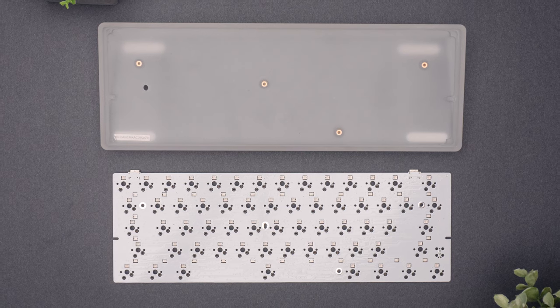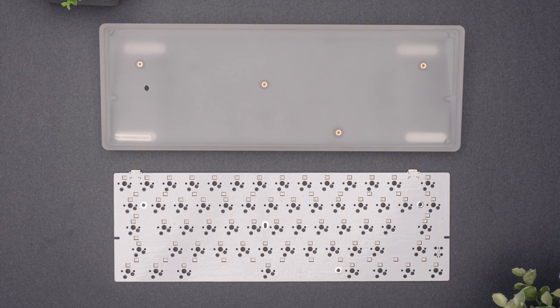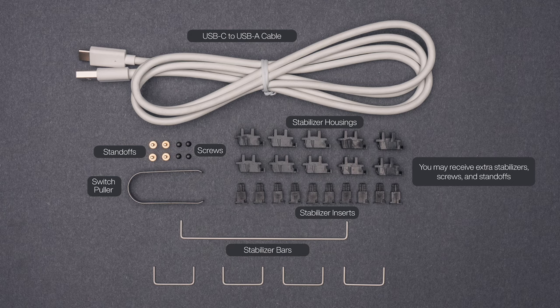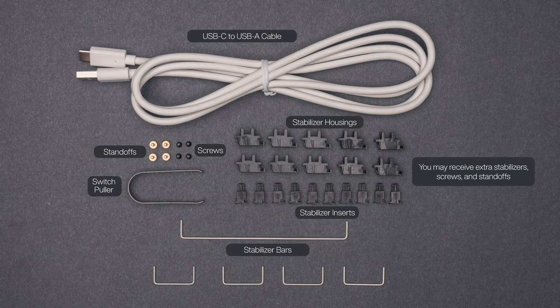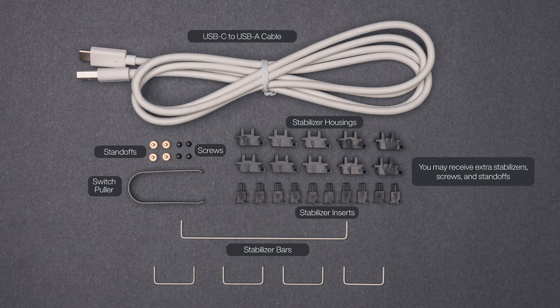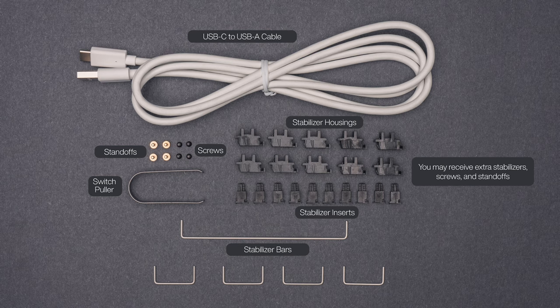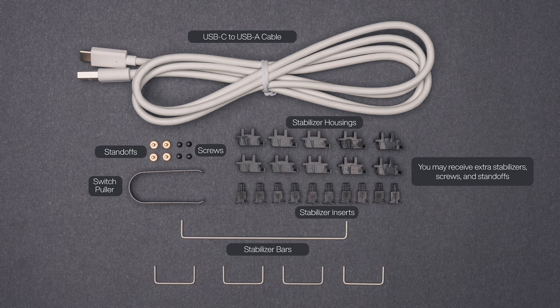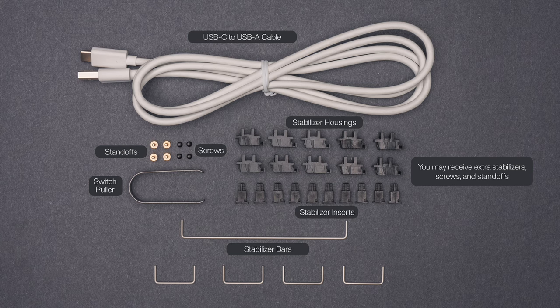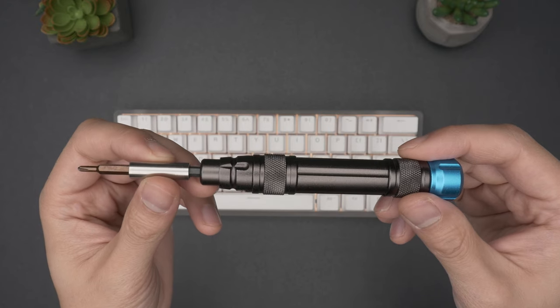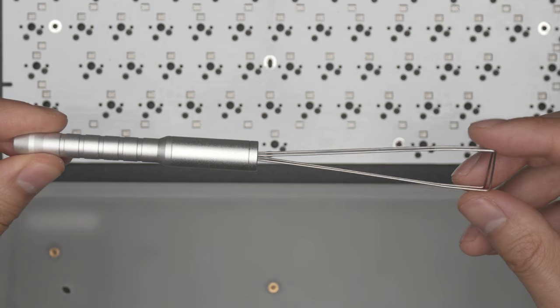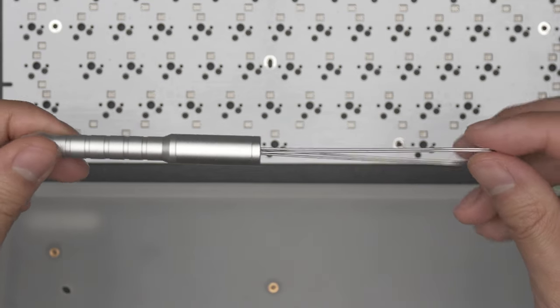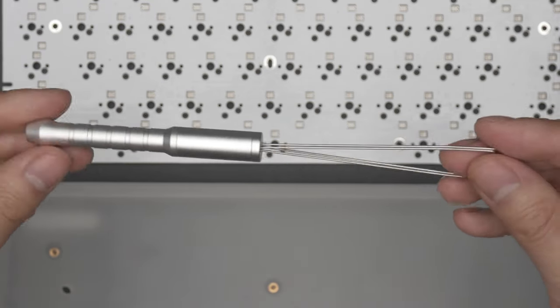Let's check your keyboard kit. You'll have a circuit board and acrylic case. As well, there will be a USB-C cable, switch puller, 4 brass standoffs, 4 screws, 10 inserts and 10 housings for stabilizers, 1 long and 4 short stabilizer bars. You'll also need a Phillips head precision screwdriver. A keycap puller is helpful but not required. If you have everything, let's start building.